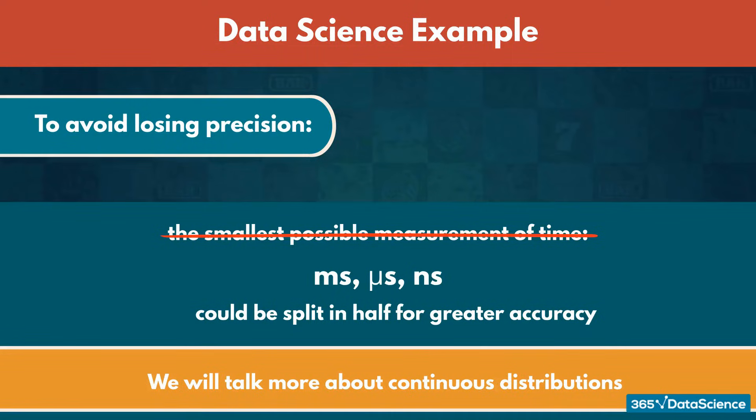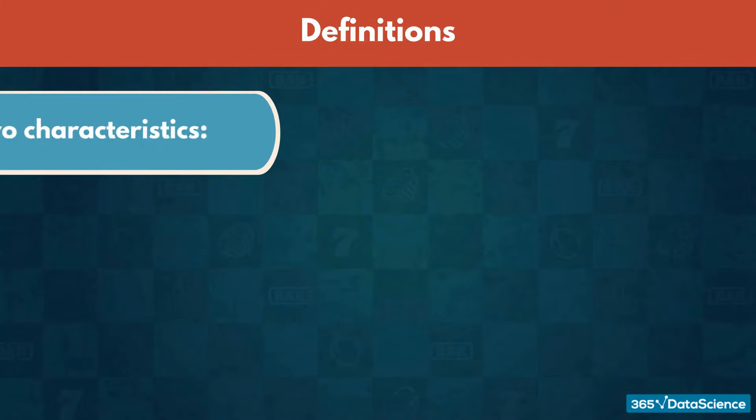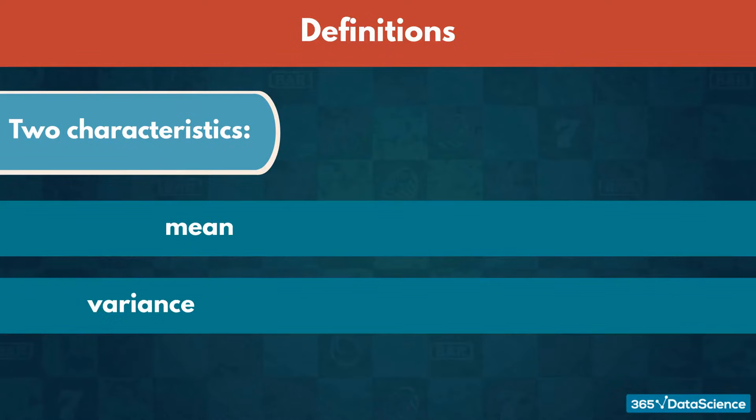Now is the time to introduce some key definitions. Regardless of whether we have a finite or infinite number of possibilities, we define distributions using only two characteristics, mean and variance.